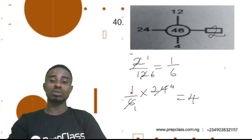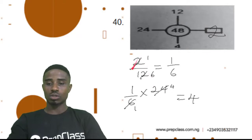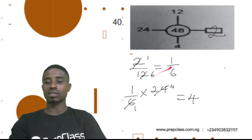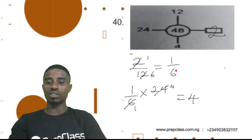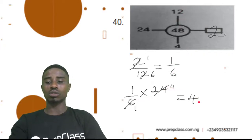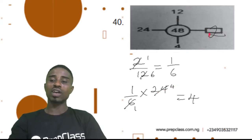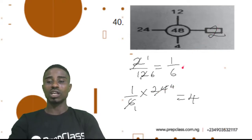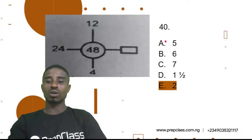And 1 over 6 times 24 is equal to 4 — because 6 into 24 is 4, so 1 over 6 times 24 gives us 4. So the correct answer here would be 2. Let's check it out. Question 40, option E — 2 is our correct answer.